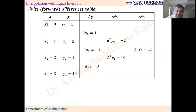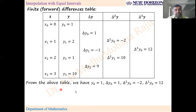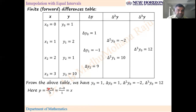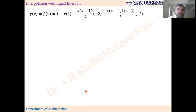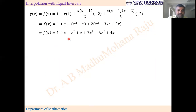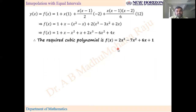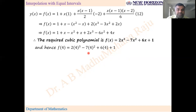For the forward interpolation formula we need the upper diagonal values: y₀, Δy₀, Δ²y₀, Δ³y₀. Since we are fitting a polynomial, x equals x symbolically, so p = x. Substituting all these values into the Newton's forward interpolation formula and simplifying, we get the required cubic polynomial as 2x³ − 7x² + 6x + 1. It is also asked to find f(4): substituting x = 4 gives f(4) = 41.